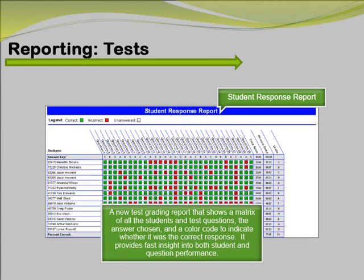One of the new test grading reports in version 8 is the Student Response Report. This report shows a matrix of all the students and test questions, the answer chosen, and a color code to indicate whether it was the correct response. It provides fast insight into both student and question performance.